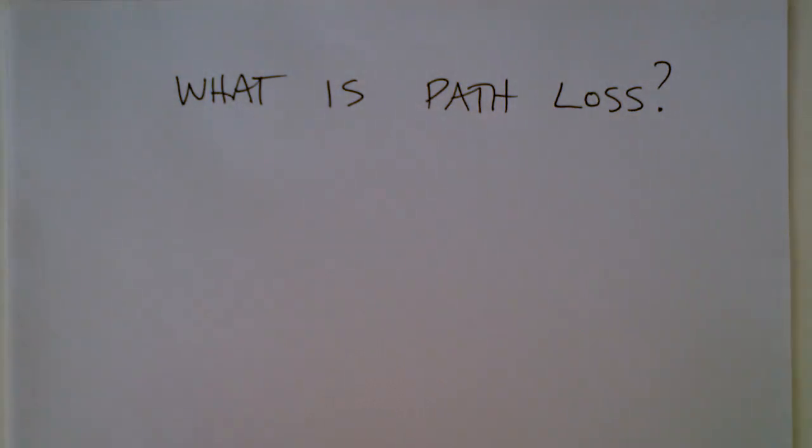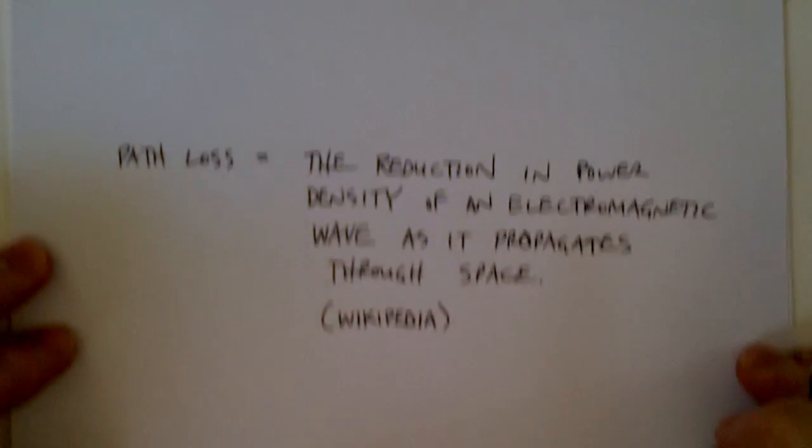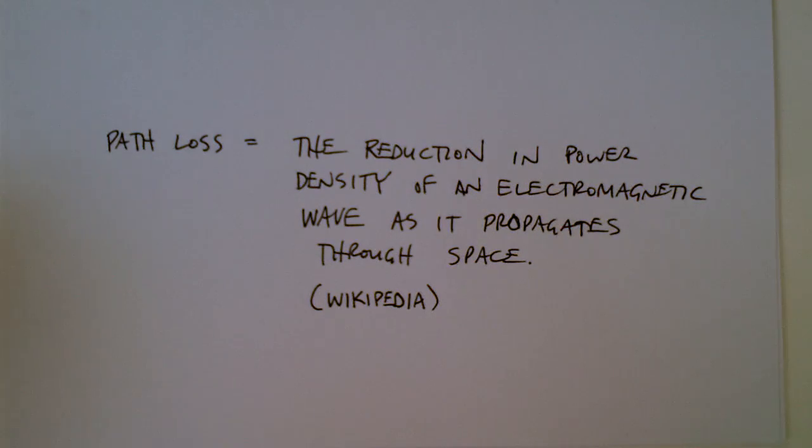We're going to talk about what path loss is. I looked up a definition on Wikipedia and it's this: path loss is the reduction in power density of an electromagnetic wave as it propagates through space.